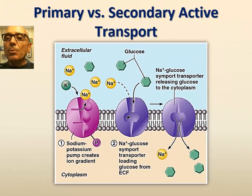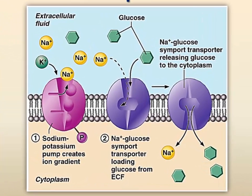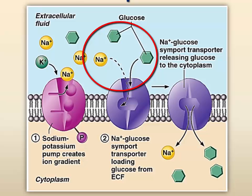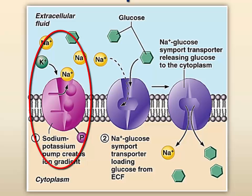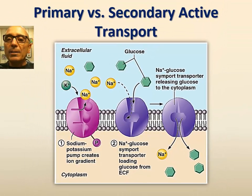An example of a symporter system is the membrane protein system that transports glucose against its concentration gradient via a secondary active transport system. In this system, glucose and sodium ions are transported in the same direction. The system indirectly uses ATP by utilizing the sodium ion gradient established by the sodium-potassium pump to drive the movement of glucose against its concentration gradient, since the symporter cannot transport sodium ions without transporting glucose at the same time, even if it's against the glucose concentration gradient. This type is known as secondary active transport, while the sodium-potassium pump is a type of primary active transport.